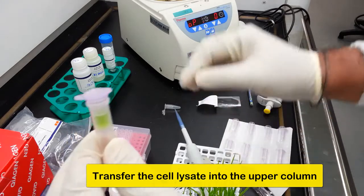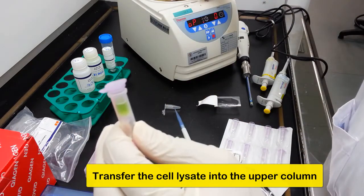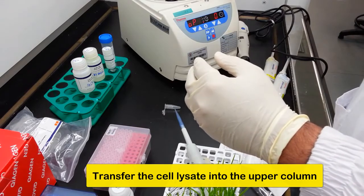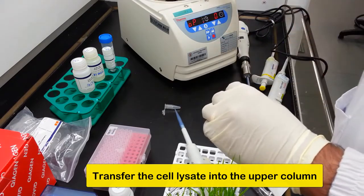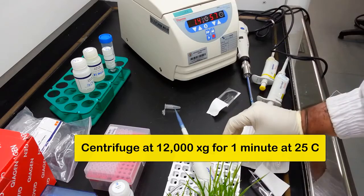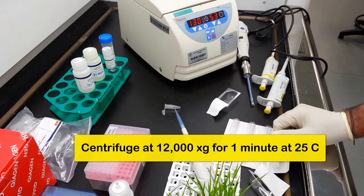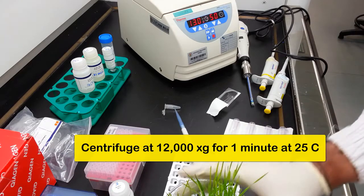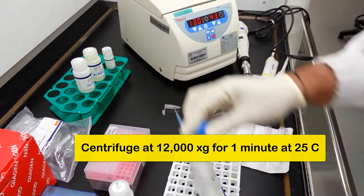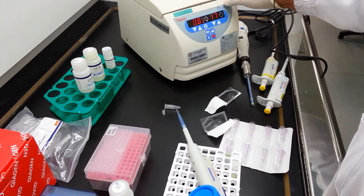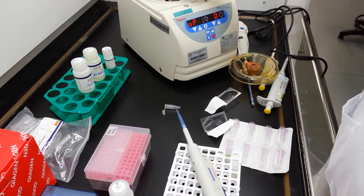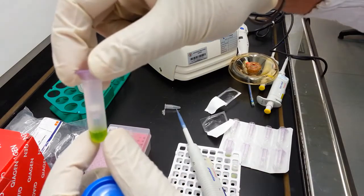And we now can proceed to centrifugation. So I have set this centrifuge to 12,000 G for one minute. This is what you will see after you spindle.